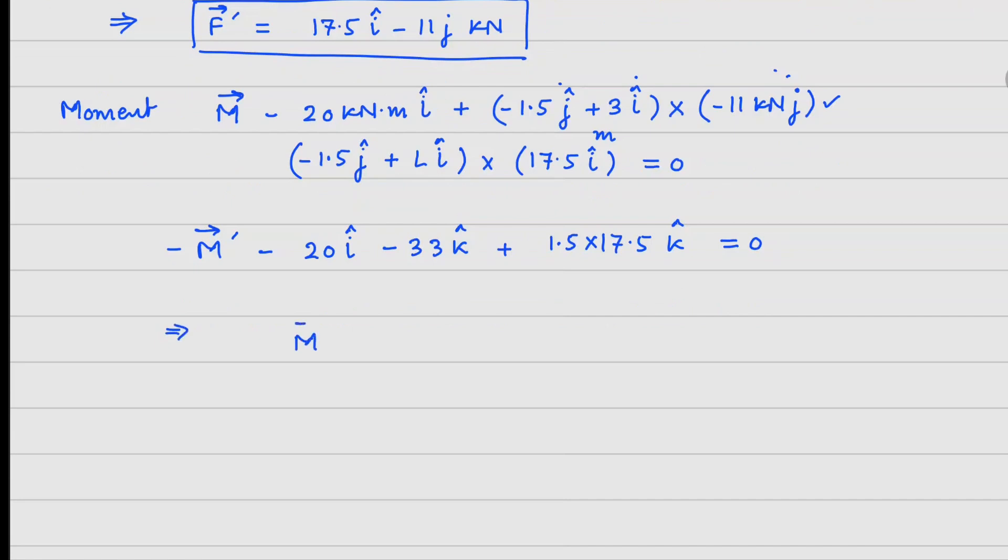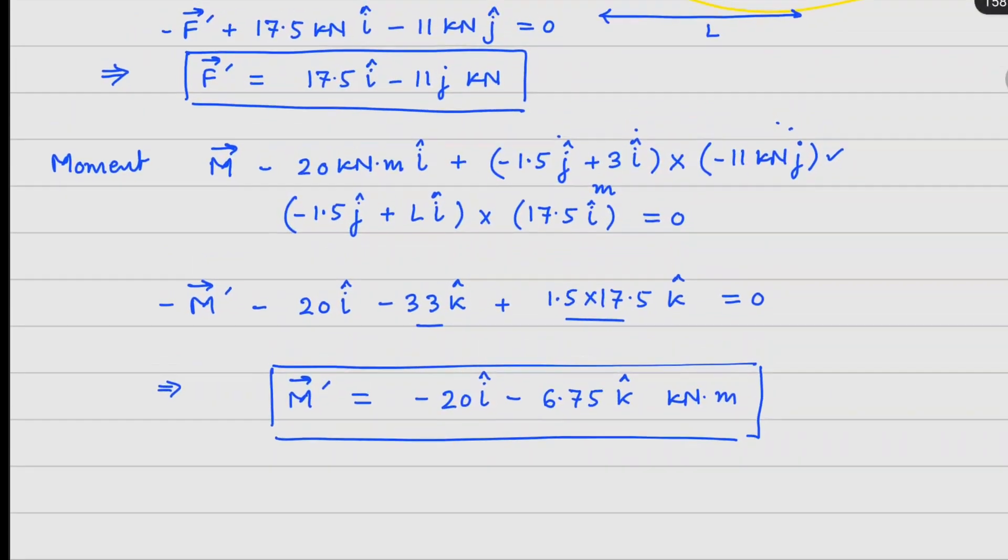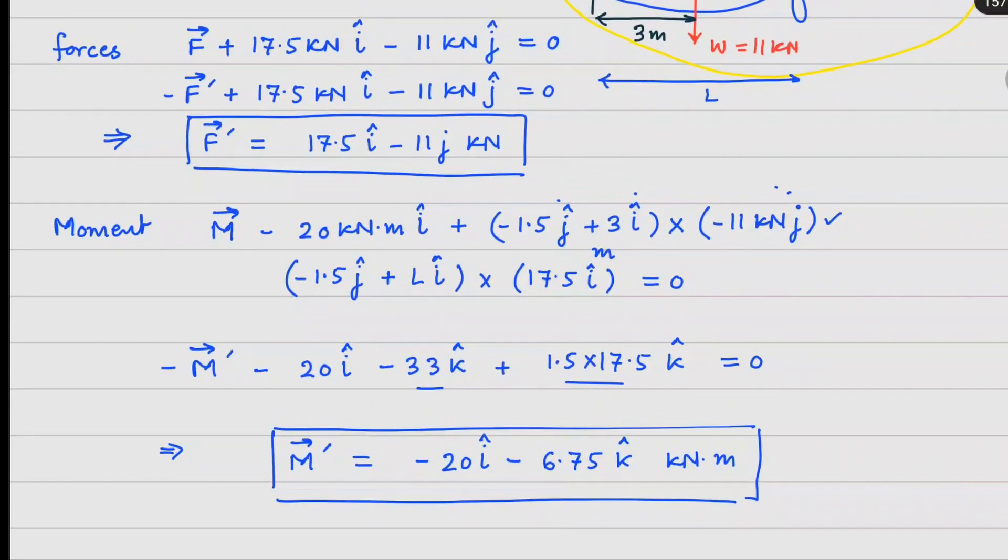So now if I write M' here and move everything to the right hand side, you will notice that we get minus 20 i cap and combining these two minus 6.75 K cap, and the unit is kilonewton meter. So at the joint, the engine propeller is delivering this much force and this much moment to the aircraft wing. So that is the final answer.